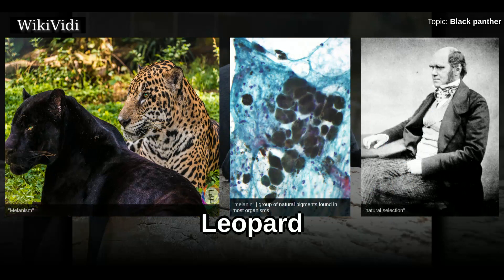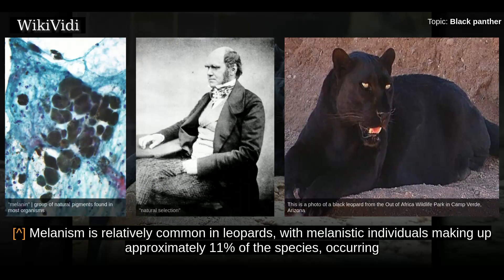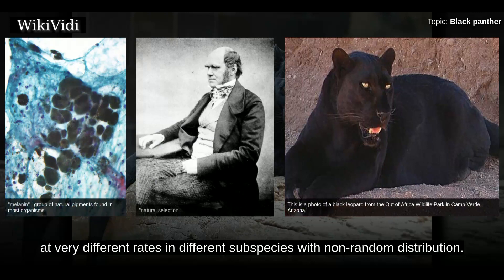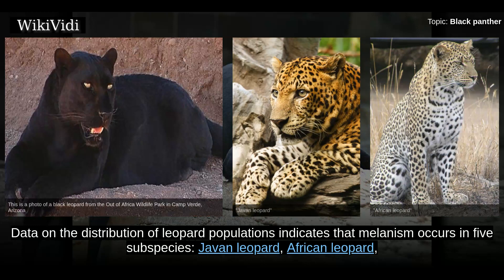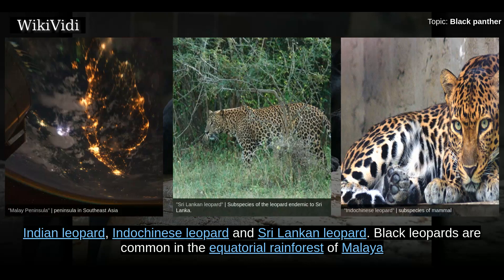Leopard. Melanism is relatively common in leopards, with melanistic individuals making up approximately 11% of the species, occurring at very different rates in different subspecies with non-random distribution. Data on the distribution of leopard populations indicates that melanism occurs in five subspecies: Javan leopard, African leopard, Indian leopard, Indo-Chinese leopard, and Sri Lankan leopard.